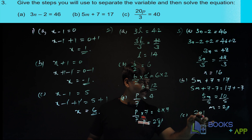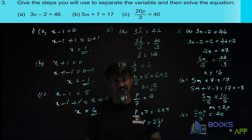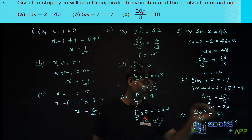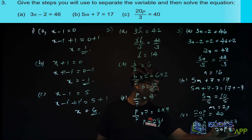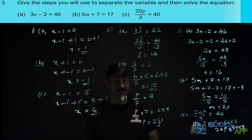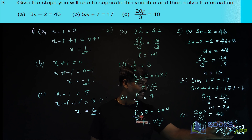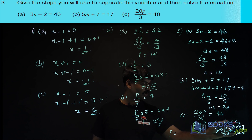The third one: 20p by 3 is equal to 40. What is the first step we have to do? Let us remove 3 first, so we multiply both sides by 3. So 3 and 3 get cancelled, giving 20p is equal to 40 into 3, that is 120. Now we have to remove 20, so divide both sides by 20. So 20 and 20 get cancelled, and 120 by 20 gives us 6. So p is equal to 6.